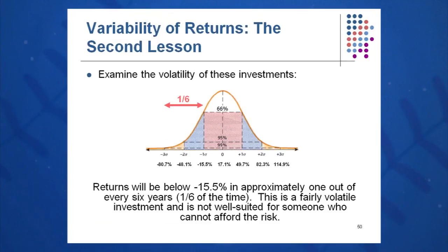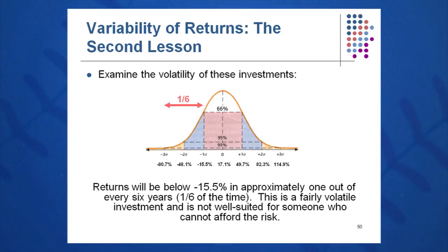One out of every three years, returns will fall below minus 15.8% or above 50.8% — very volatile. Is this a good investment for widows and orphans? Probably not. If you cannot afford the risk of a drop of roughly negative 16%, it's wonderful when it goes up 40 or 50%, but it is probably not well suited for those who cannot bear the risk, like widows and orphans. Statistics can help us make good decisions in our investing lives.